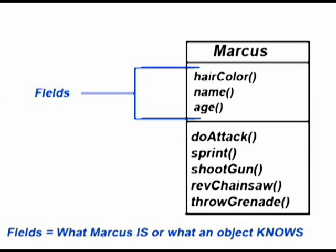That's why we should get into fields. Fields basically define what an object is — the specifics of this object, and in some cases, what it knows. In programming we'd say it's what an object knows, but I'm going to define it as what an object is. So Marcus's fields might be his hair color — we can define Marcus by his hair color, maybe his name or his age. Those can all be fields or properties. Properties are something different; I'll be going over those later. Just think of fields as defining the object and separating it from the others.